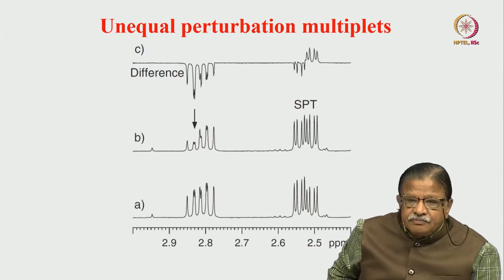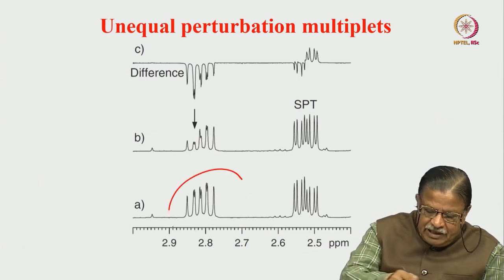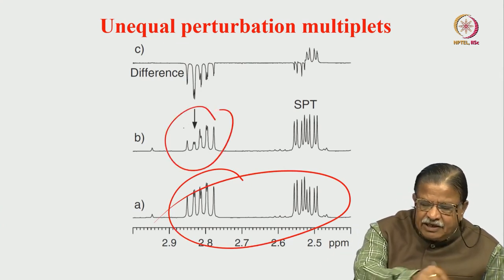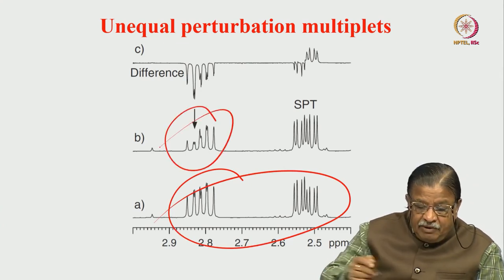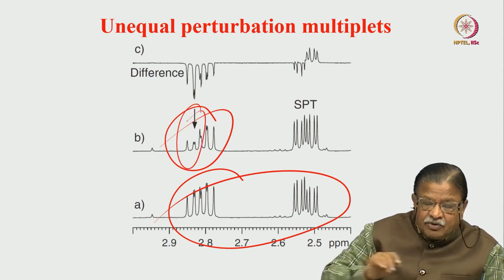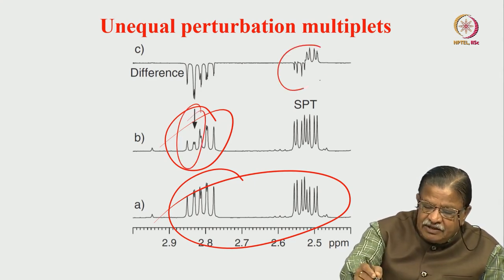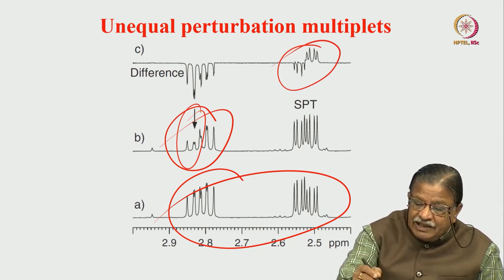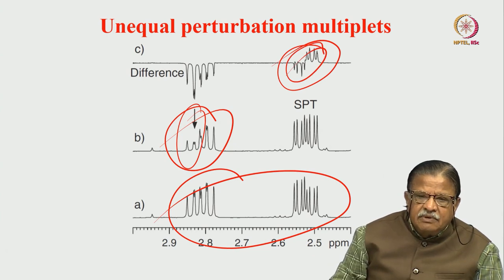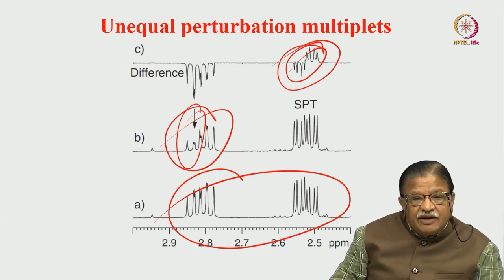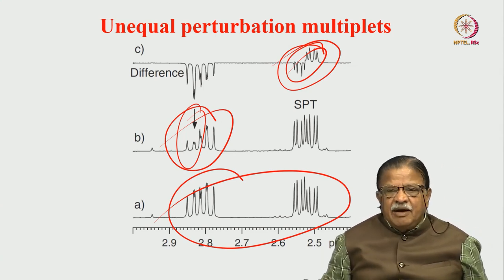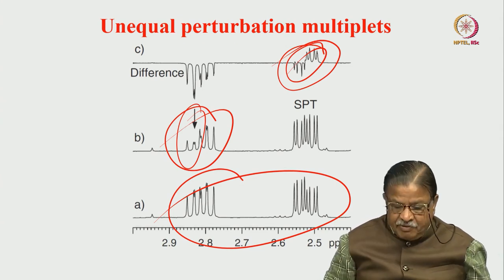This is an example showing what happens in a spectrum like this. This is selectively saturated, but you see it is not uniformly saturated. When the difference is taken, you can see there are anti-phase components. If you take the area of this, it may become zero — then you will not see any NOE even if there is one. These are all problems of unequal perturbation of multiplets. If the multiplets are not properly perturbed, you are going to get this type of problem.